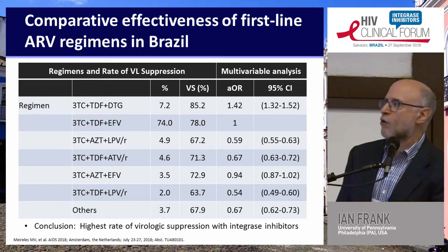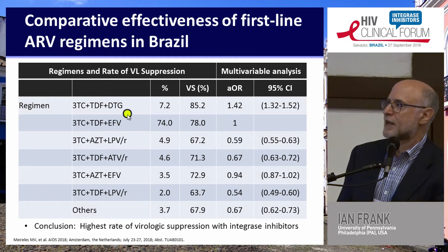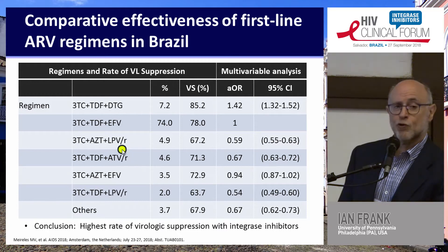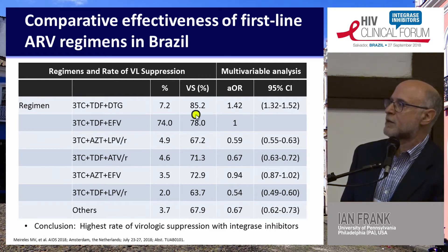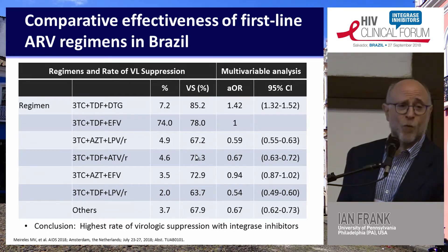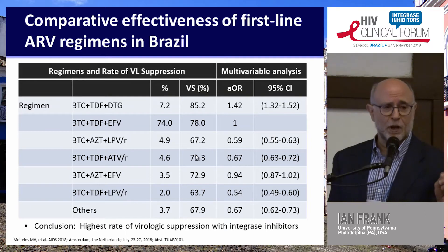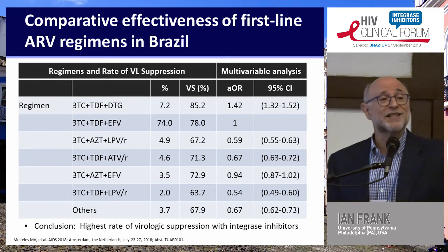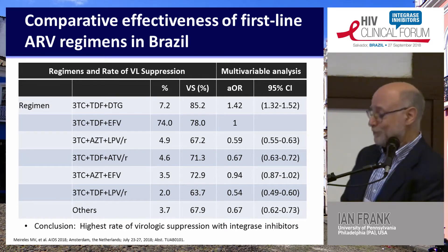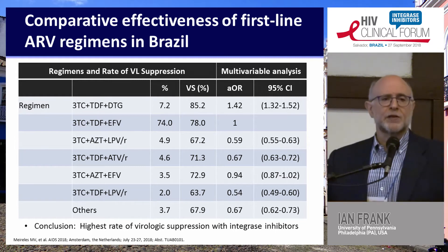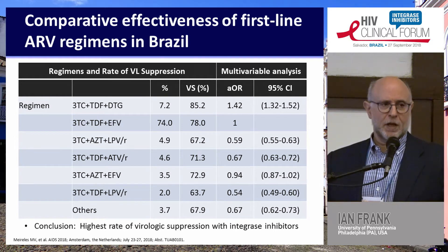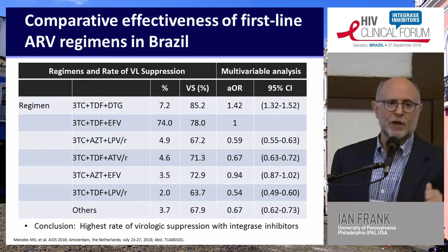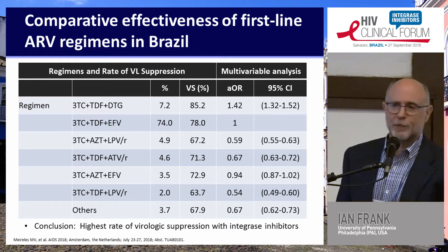Comparing outcomes in folks who got TDF-dolutegravir-lamivudine with people who got one of the boosted protease inhibitors, such as atazanavir, we see a rate of virologic suppression about 14% better in the group that gets dolutegravir. So keep those numbers — 7 and 14 — in the back of your mind. In this real-world analysis, individuals who get an integrase inhibitor do better than people who get the alternatives.